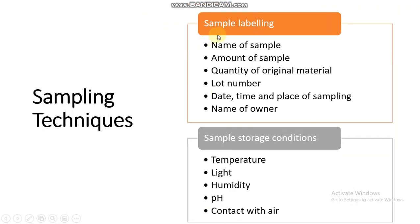For sample labeling, the following information should be mentioned on the sample: name of the sample, amount of sample, quantity of original material, original material, lot number, date, time and place of sampling, and name of the owner.